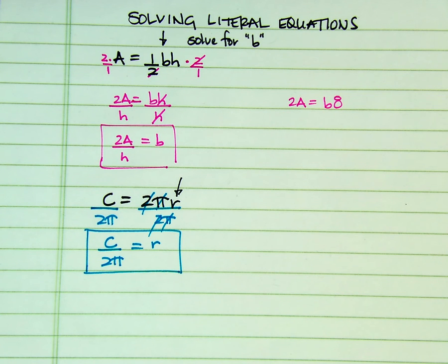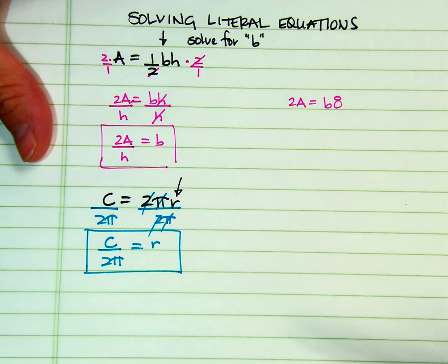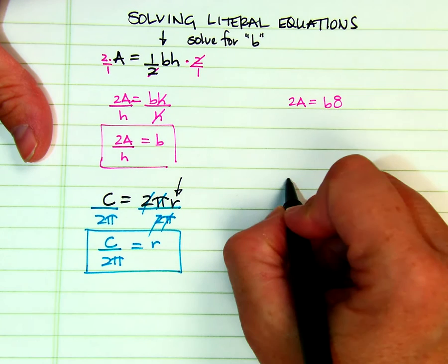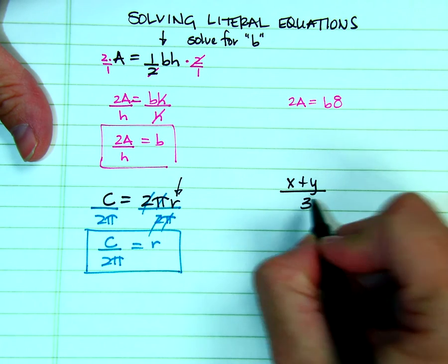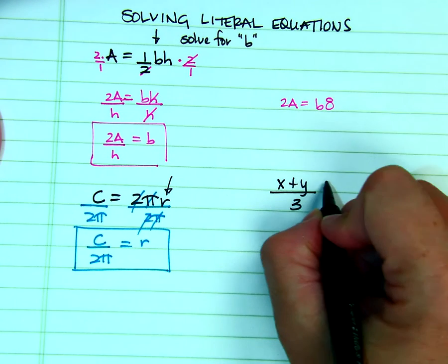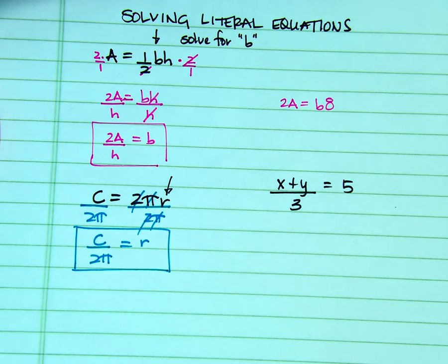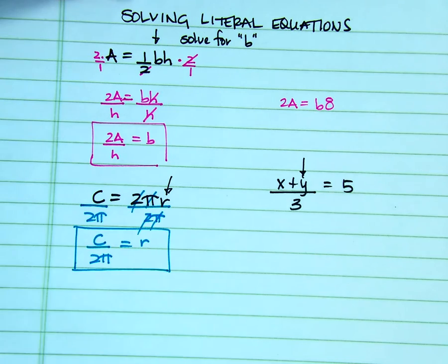Ok, let's do X plus Y all over 3 equals 5. And let's solve for Y. So we are trying to get Y out by itself.